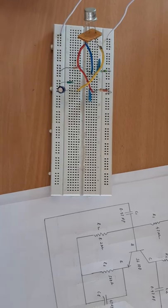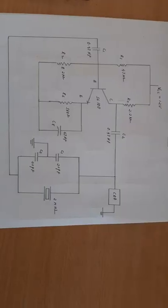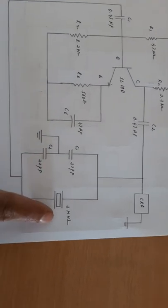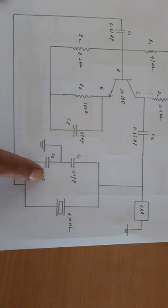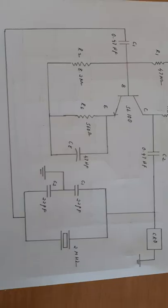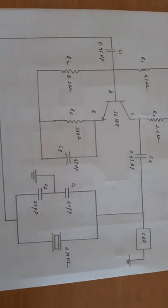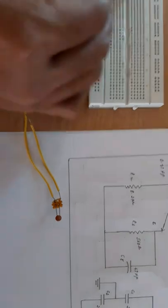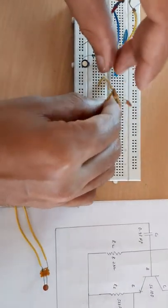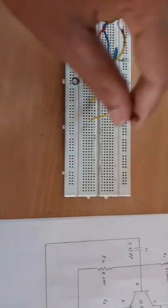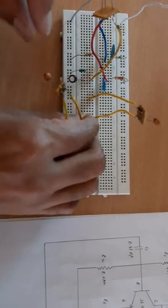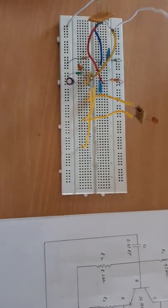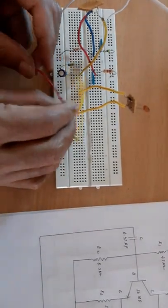Now coming back to the circuit diagram, this is the tank circuit. Here we need two 22 picofarad capacitors and one 2 megahertz crystal. Between the two 22 picofarad capacitors we need to connect one ground. I have taken two 22 picofarad capacitors — one capacitor connected here and the other connected here. Where the two 22 picofarad capacitors meet, I am connecting it to ground.